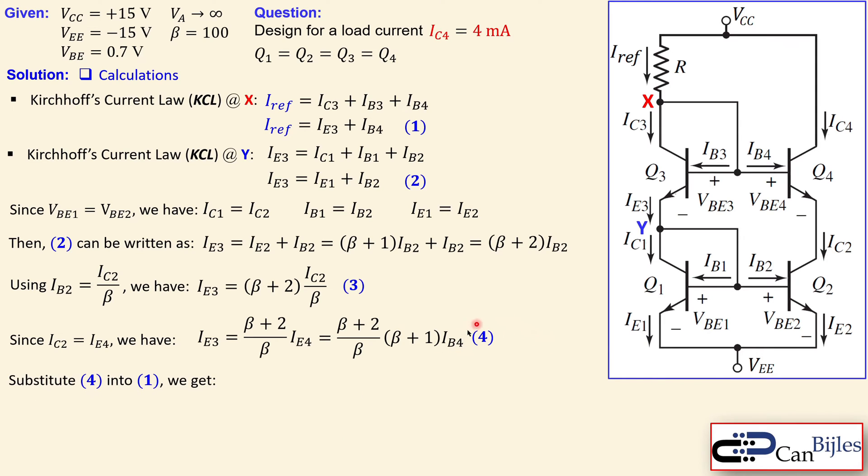Now when we substitute equation number four into equation number one, we get: Iref equals IE3, which is given by this expression. Bringing β + 1 in the numerator, we get (β + 2)(β + 1) over β times IB4, but there's also another IB4 there. Taking out IB4, we can further simplify this into one fraction.